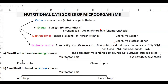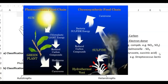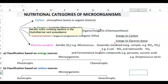The next important factor that decides nutritional classification is energy. Energy can be obtained from sunlight — those organisms are referred to as phototrophic organisms. Whereas another group of organisms can obtain their energy from chemicals, which can be organic or sometimes inorganic. A classical example of inorganic energy acquisition is aerobic sulfur-oxidizing bacteria that dwell in hydrothermal vent ecosystems, undergoing the process of chemosynthesis.